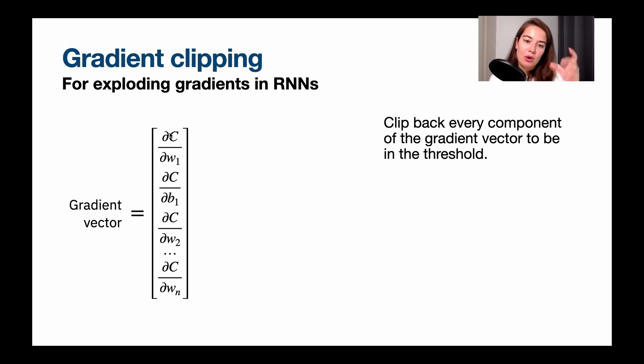And these ones are all after we know how each component, how each parameter contributes to the cost of the network that we have right now. Then we put them all in one big vector and we call this the gradient vector.